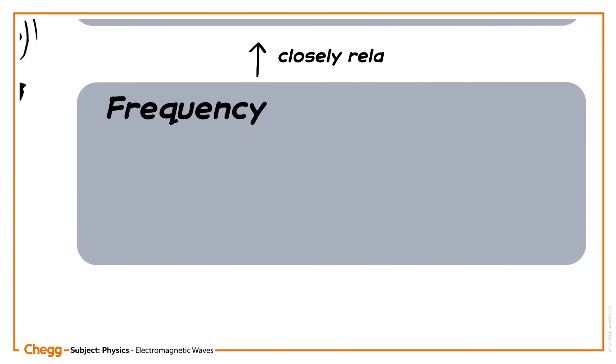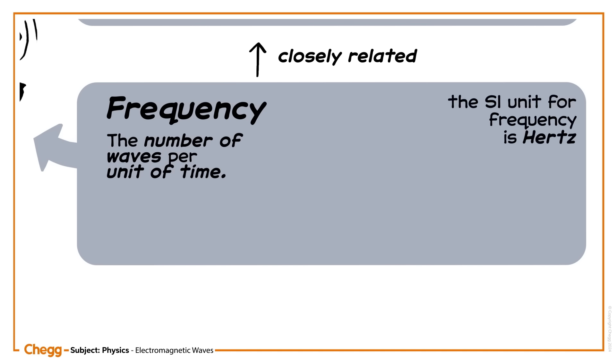Frequency is closely related to wavelength. Frequency is the number of waves per unit time. The SI unit for frequency is hertz. One hertz is the number of waves per second.